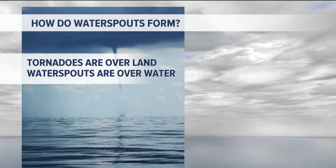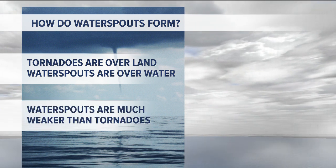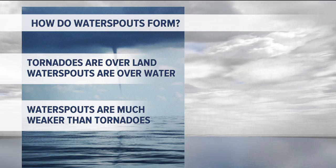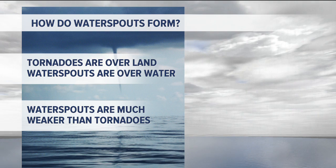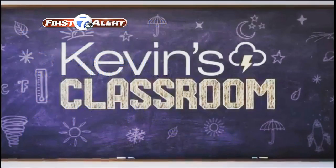Usually the atmosphere is a little different of a setup for tornadoes than water spouts, and that is a big reason why tornadoes are much stronger than water spouts. But basically, it's just fast rising air above warm water, and that begins to rotate as it spirals up toward a cloud. So that's how a water spout is formed.